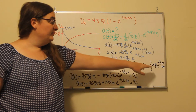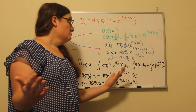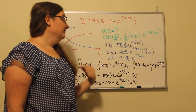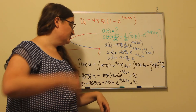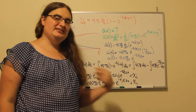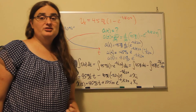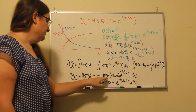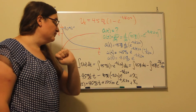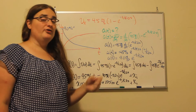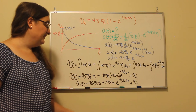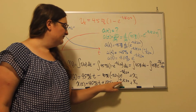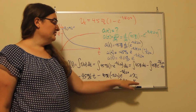Using u substitution, u is negative t over 5.0 seconds, so du/dt is negative 1 over 5.0 seconds, meaning dt equals negative 5 seconds times du. The integral of e to the u du is just e to the u. So we have e to the negative t divided by 5.0 seconds times negative 5 seconds times 45 meters per second, with the minus sign from our original equation. Those two minus signs multiply to give us plus 225 meters times e to the negative t divided by 5.0 seconds, plus our initial position.